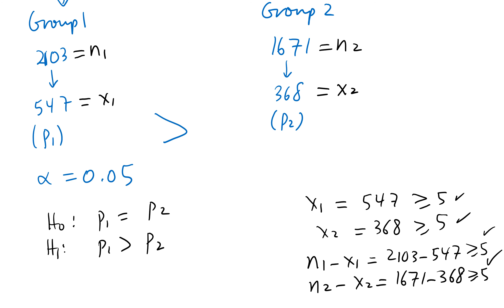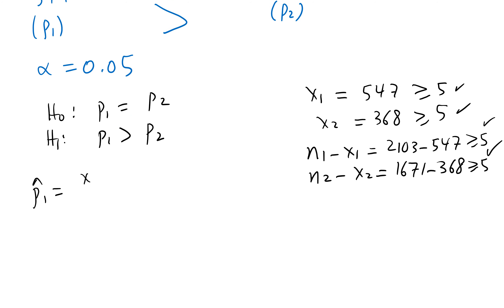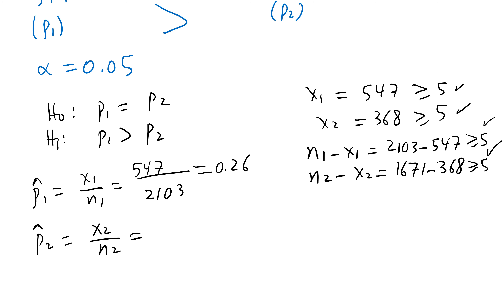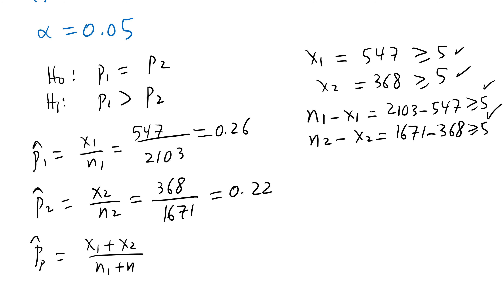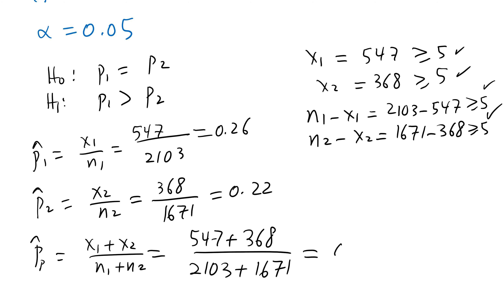Next, find the p-hats. p1-hat = x1/n1 = 547/2103 ≈ 0.26. p2-hat = x2/n2 = 368/1671 ≈ 0.22. Now find the pooled proportion p-hat-sub-p: (x1 + x2)/(n1 + n2) = (547 + 368)/(2103 + 1671) = 915/3774 ≈ 0.242.